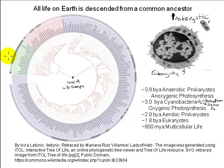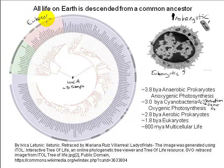The tree illustrates the classification of cellular life into three domains — two of which, the archaea and bacteria, are prokaryotic cells, and the third being eukarya, highlighted in pink, which encompasses animals, plants, algae, fungi, and protists.